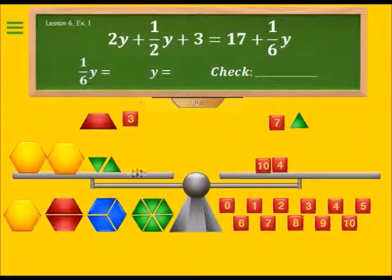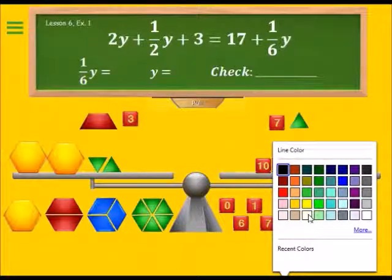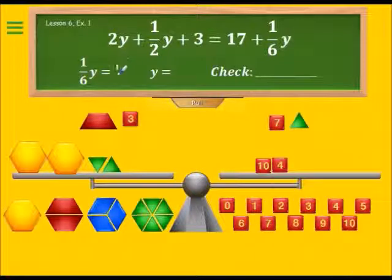That means that each one-sixth of y is equal to one. Each green block is a sixth of y. So let's write the answer up here. So one-sixth of y is one, and therefore y is going to be six.